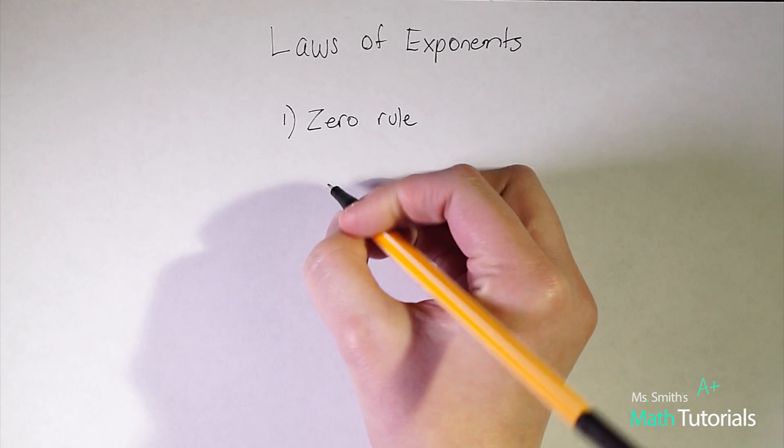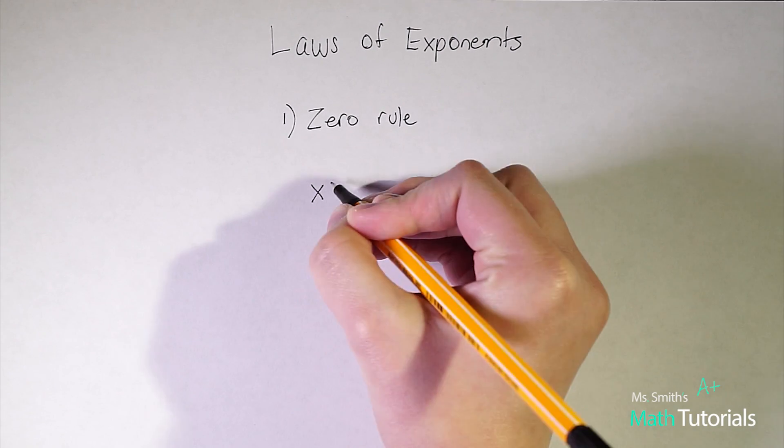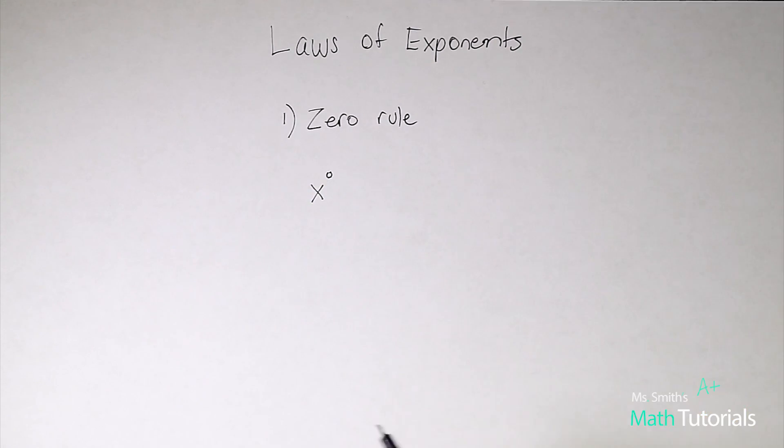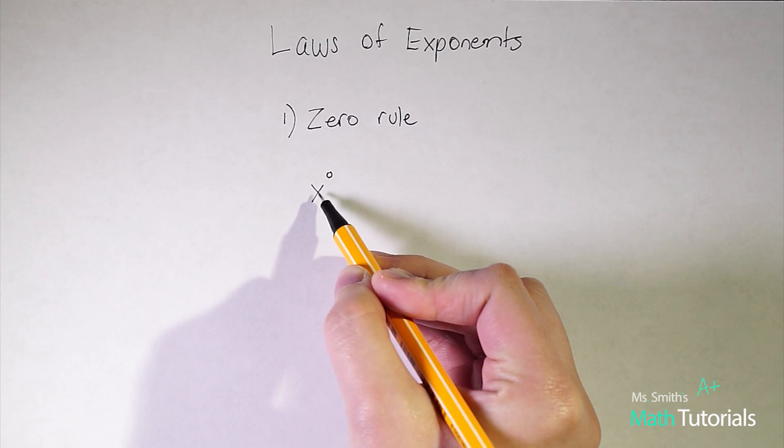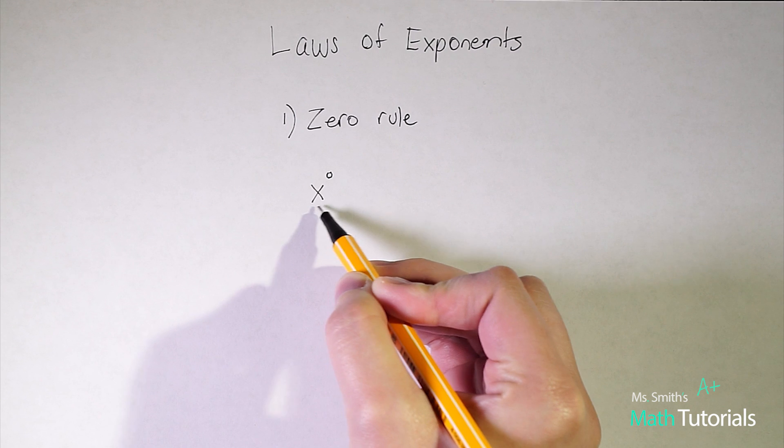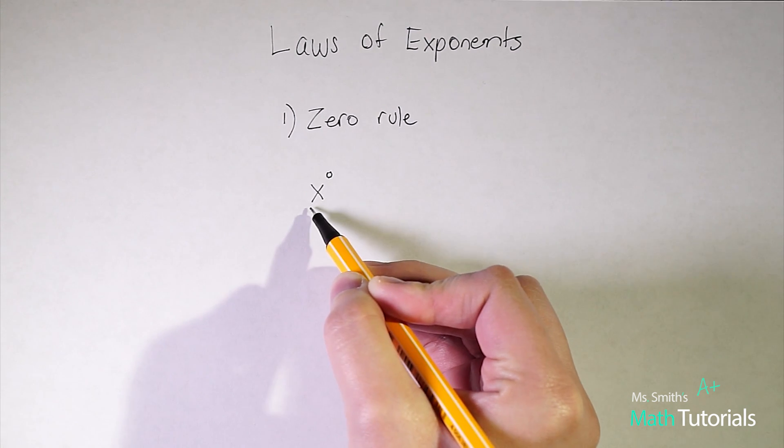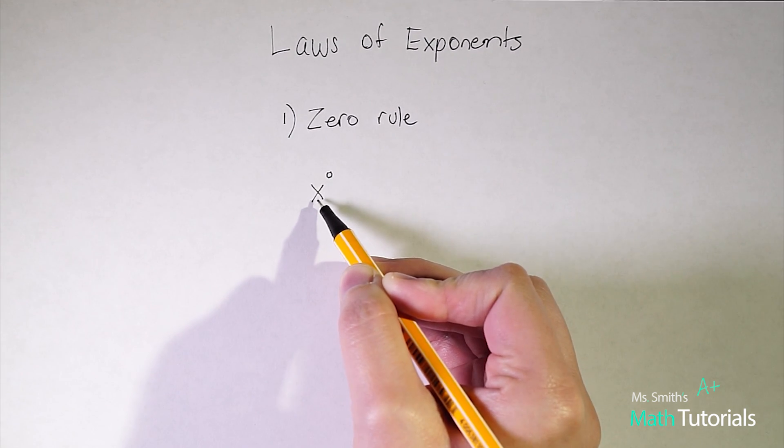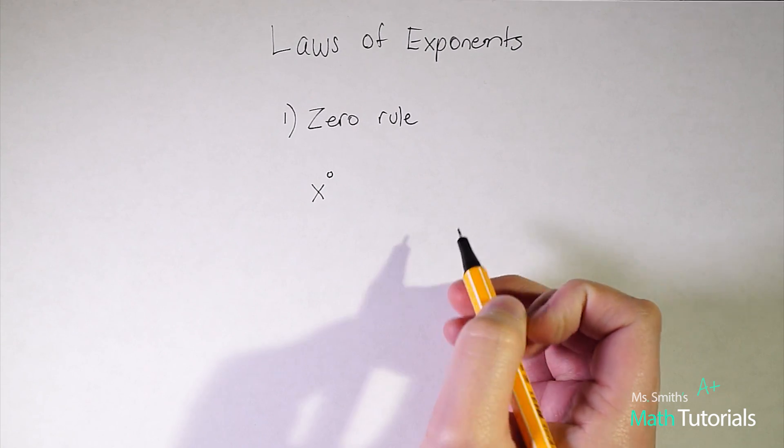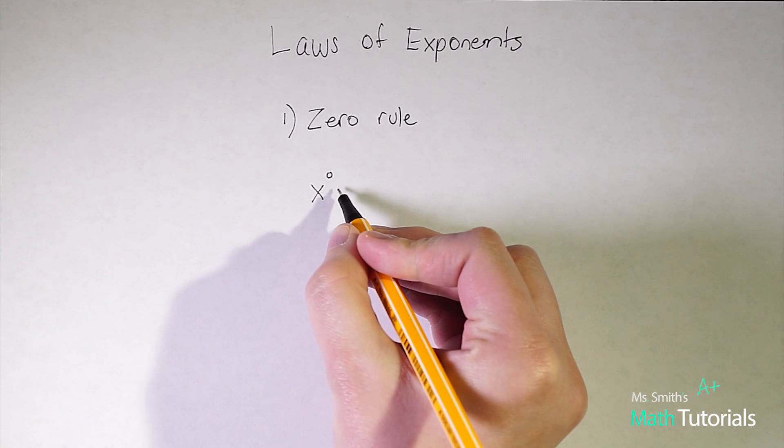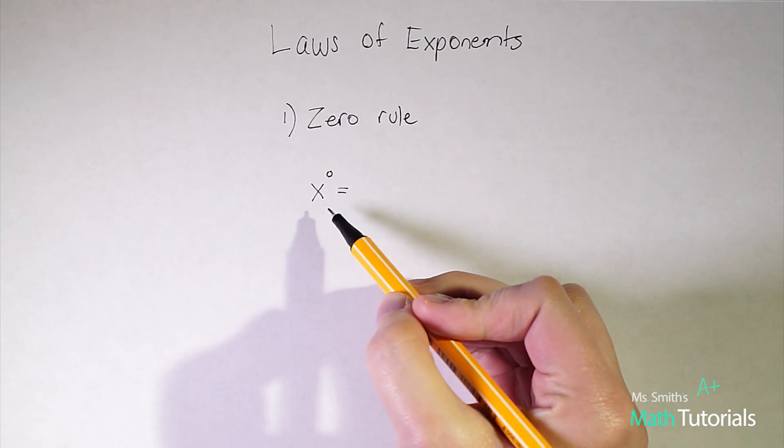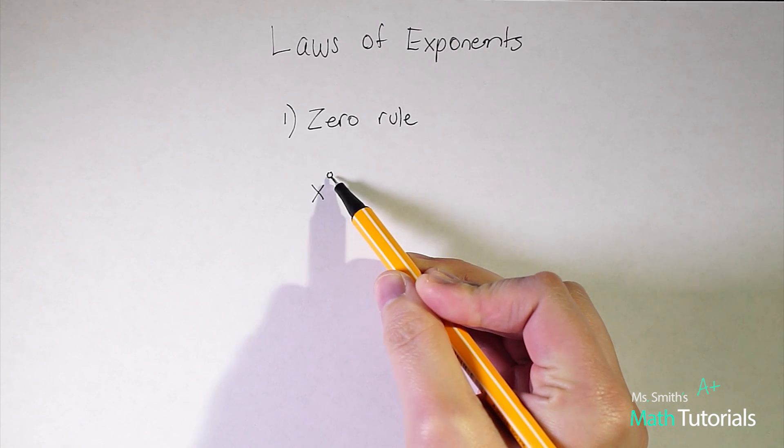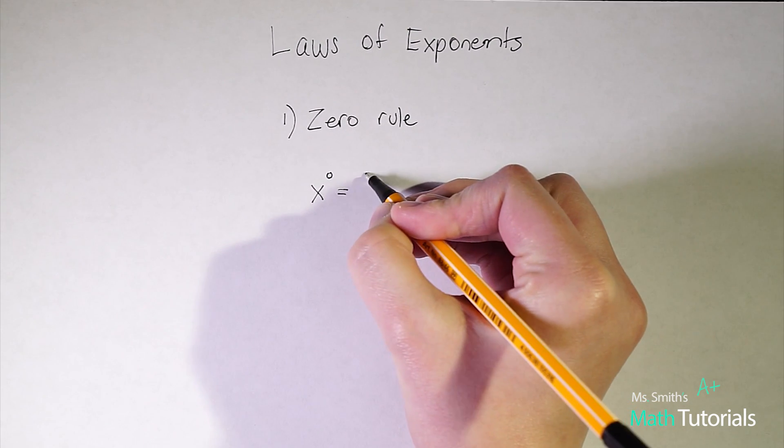It's a very basic rule and it states that any time we have an exponent of zero, so in this case we have a base of x. A base is going to be your large letter, we call them variables, or number, and the exponent will be the tiny number above it. Anytime you have a whole number or variable brought to the power of zero, the answer will just be one.